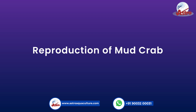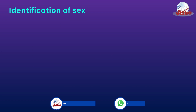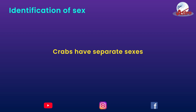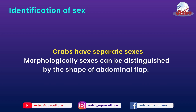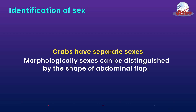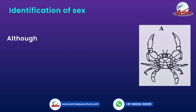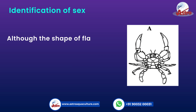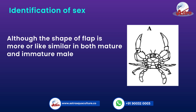Reproduction of Mud Crab. Identification of Sex: Crabs have separate sexes. Morphologically, sexes can be distinguished by the shape of the abdominal flap. Although the shape of the flap is more or less similar in both mature and immature males.